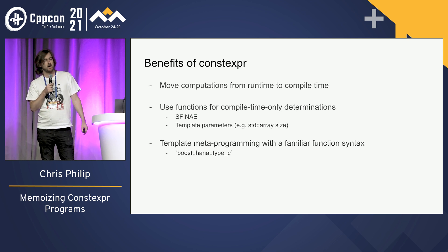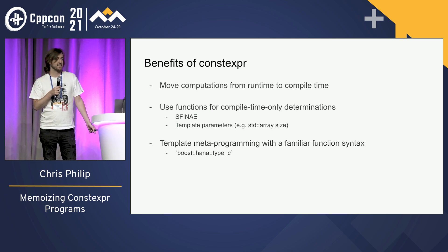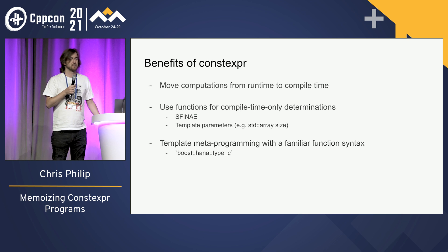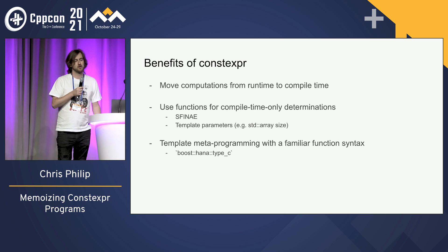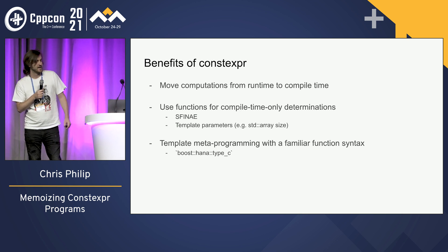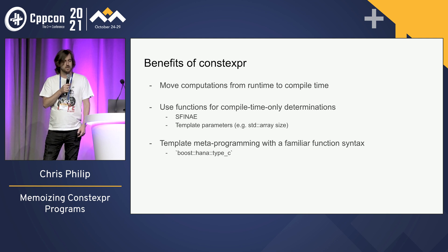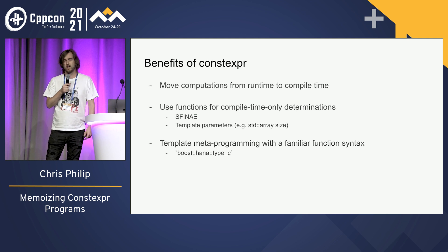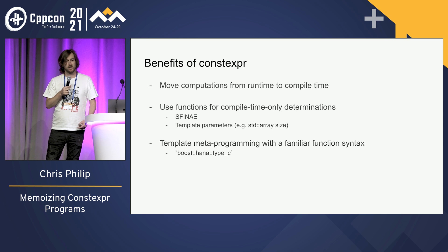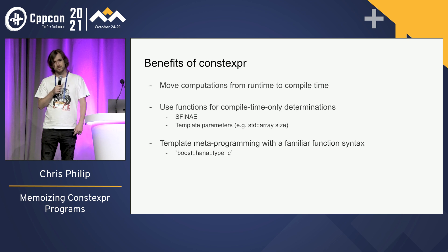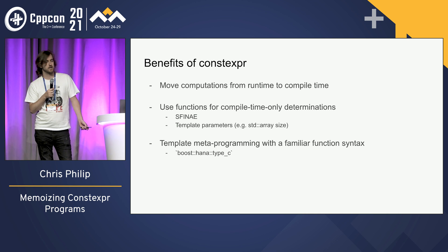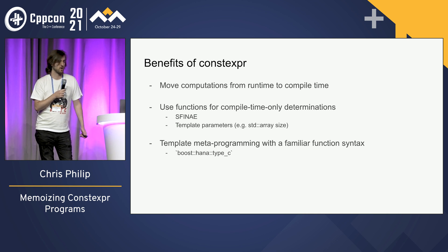For example, you could make an array whose size is the Fibonacci of some other number. I don't know why you'd want that, but you could totally do it. And then for certain template metaprogramming strategies like boost HANA type C, doing that with constexpr functions lets you use more function-style syntax compared to traditional template metaprogramming.